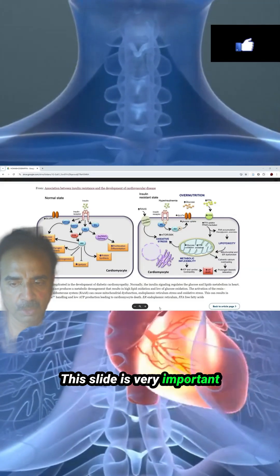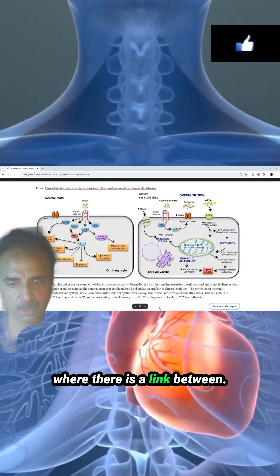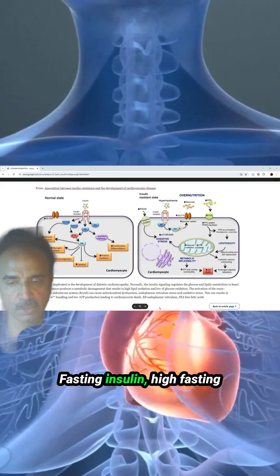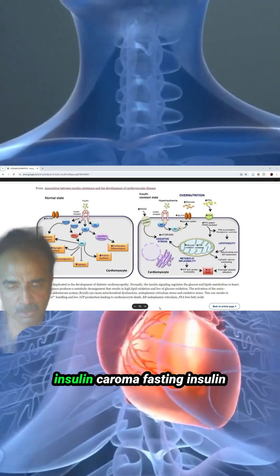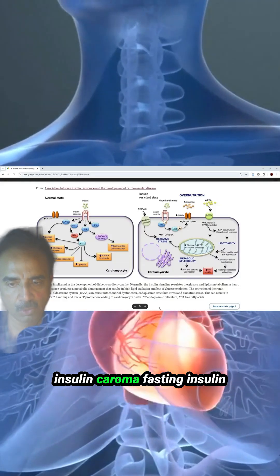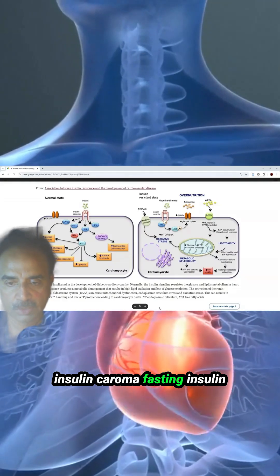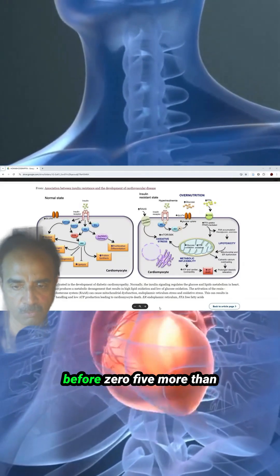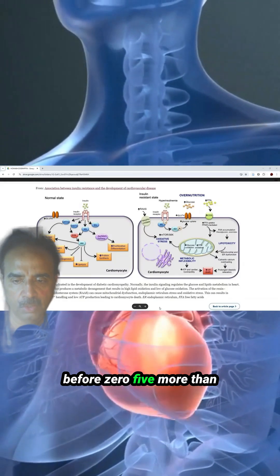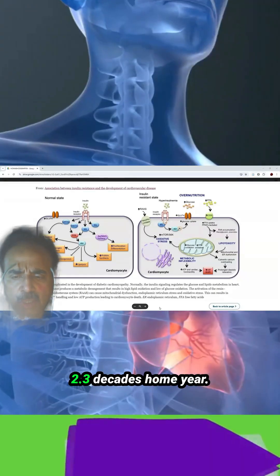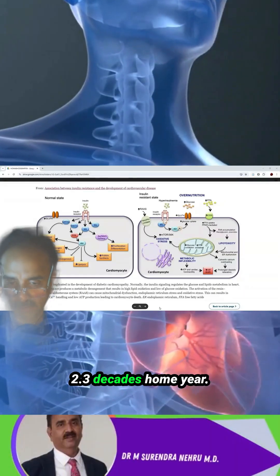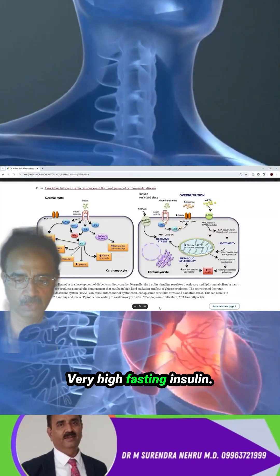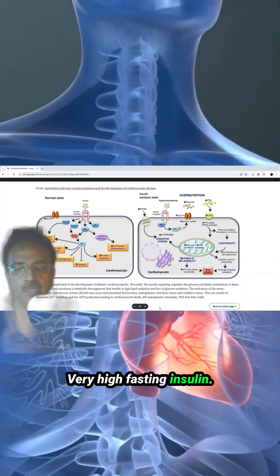This slide shows an important link between fasting insulin and a measure called HOMA IR — high fasting insulin. The HOMA IR formula is fasting insulin divided by fasting blood sugar, divided by 405, with a threshold of more than 2.3. A very high fasting insulin indicates elevated HOMA IR.